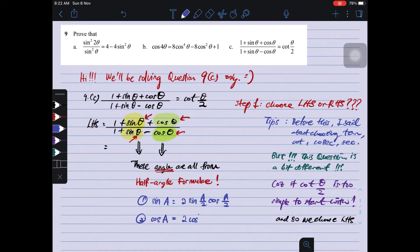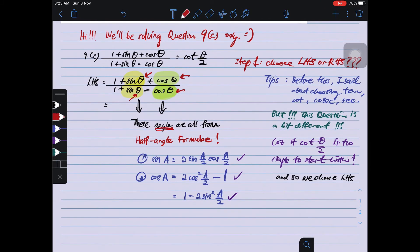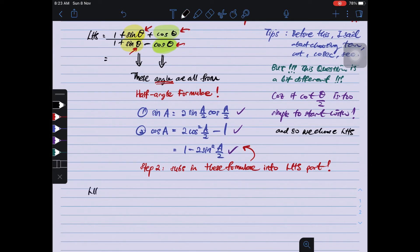Whereby sin A equals to 2 sin A over 2 cos A over 2. So this is the first formula. The second formula is cos A equals to 2 cos squared A over 2 minus 1, and another one is 1 minus 2 sin squared A over 2. There are two types. So these three formulas are quite famous to use in exam, always be used in exam.